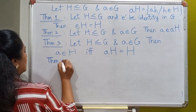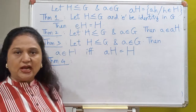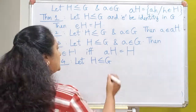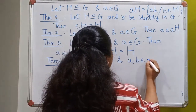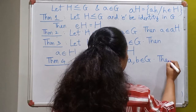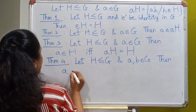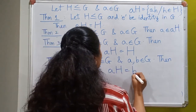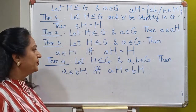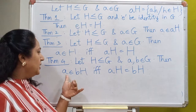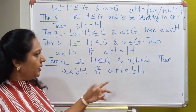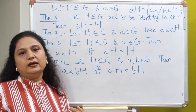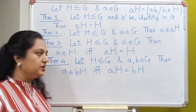We look at the next result. Let H be a subgroup of a group G and A and B be two elements of the group. Then we shall prove that A belongs to BH if and only if AH is the same as BH. So we prove that if an element lies in the coset of some other element, then the coset generated by this element has to be the same as the coset generated by that element, and the converse also works. It is again an if-and-only-if result, so we break up the proof in two parts.